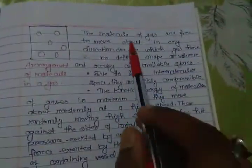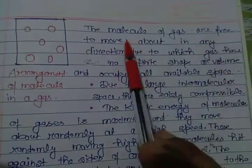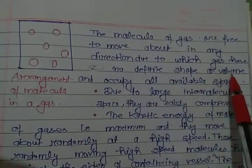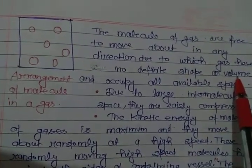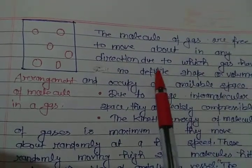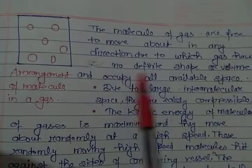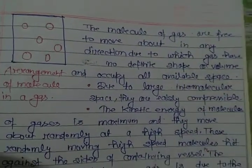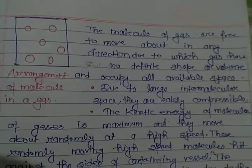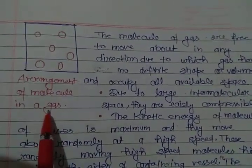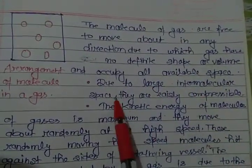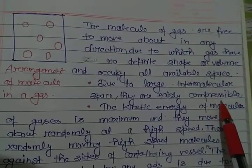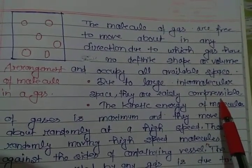The molecules of gas are free to move about in any direction due to minimum intermolecular force, which is why gases have no definite shape or volume and occupy all available space. Due to large intermolecular space, gases are also easily compressible — the intermolecular space is maximum, so it can be compressed easily.